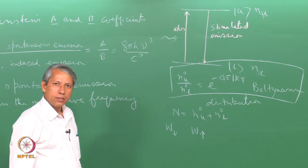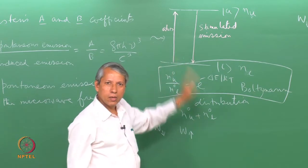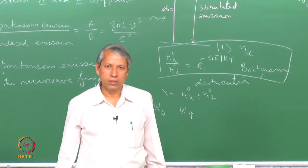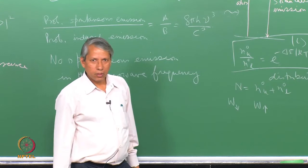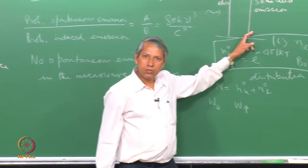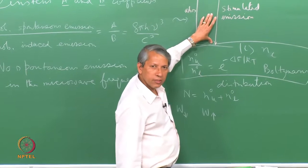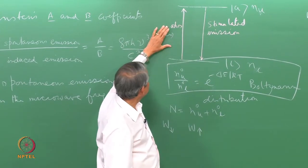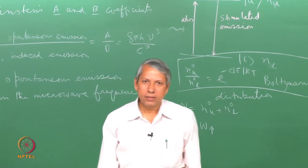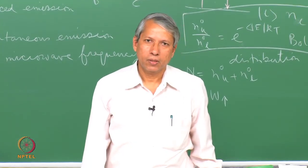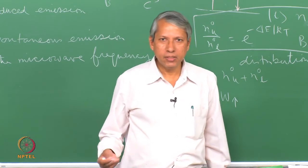That is the key problem: if there are no other processes involved, then very soon after the resonance condition is satisfied the absorption will disappear because the two levels get equally populated. There must be some other process which maintains a population difference that can be sustained even in the presence of radiation, and this population difference is what decides the amount of light that is absorbed and gives the absorption spectrum.